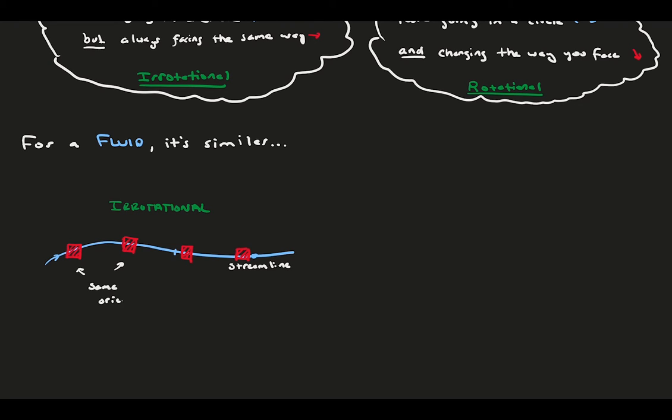Now, consider a second case, with the same streamline, but the box is clearly rotating. The fluid element is changing orientation, and is considered rotational. This specific type of rotation would be considered solid body rotation, because the fluid element is rotating without distorting, as if it were a solid box.